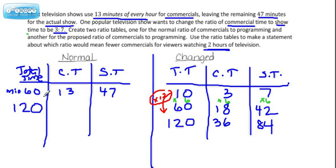And we're going to use that same thinking over here. 60 times what is 120, and wouldn't it be times 2? So to finish this up, just multiply times 2 and times 2.